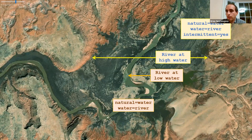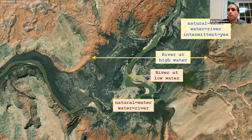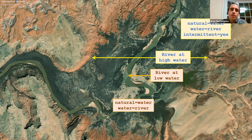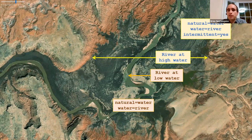More likely you'll have something like a narrow river running through an area with a 'bathtub ring' effect around it, where you can see where the water normally comes up to. In those cases you can use the intermittent tag on the sections where you can obviously see where the water goes.